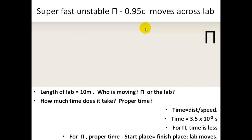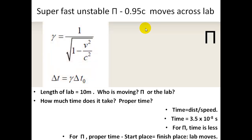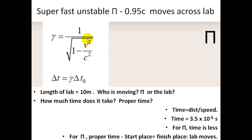We measure a time of 3.5 times 10 to the minus 8 seconds — not proper time. The actual proper time for the pion is less than that, divided by the Lorentz factor. With V equal to 0.95c, calculate 0.95 squared, subtract from 1, square root it, and take the reciprocal to get the gamma factor. Then divide our lab time by the gamma factor to find the pion's proper time — it ends up being roughly a tenth of our measured time.